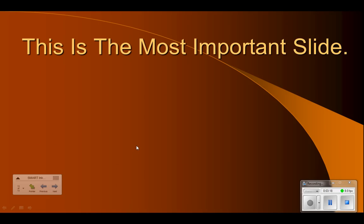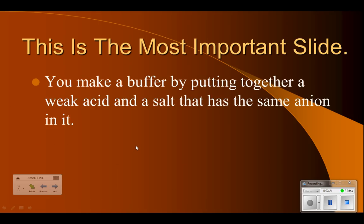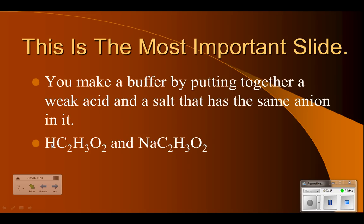This is the most important slide — a summary of everything you need to do for a buffered problem. You make a buffer by putting together a weak acid and a salt that has the same anion in it. A weak acid is one not on the strong acid list. Look at the anion on the right side and make sure you have the same anion in the salt. For example, acetic acid and sodium acetate both have C2H3O2. Carbonic acid and sodium hydrogen carbonate both have HCO3.